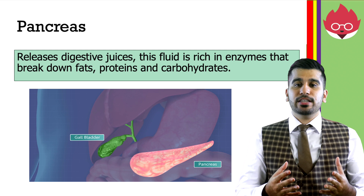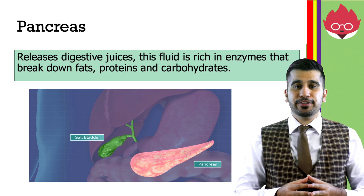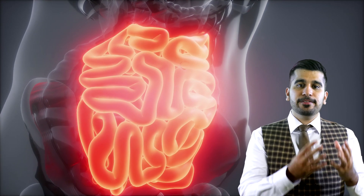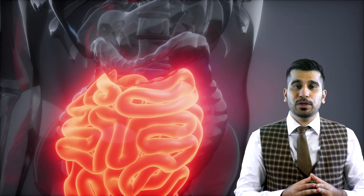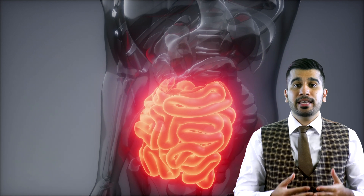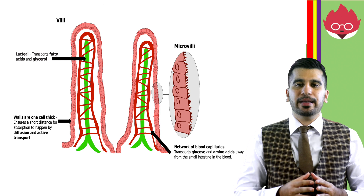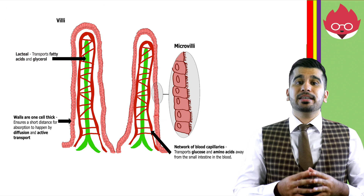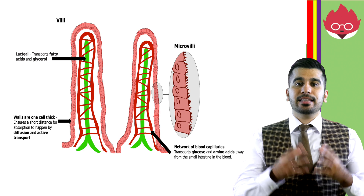The pancreas releases digestive juices rich with enzymes that break down fats, proteins, and carbohydrates. From the stomach, food enters the small intestine. At the duodenum, which is the first section of the small intestine, more enzymes break down carbohydrates, proteins, and fats into smaller molecules. At the ileum, the final section of the small intestine, any food still not absorbed is absorbed into the blood. The small intestine is made up of finger-like structures called villi, which are made up of cells called microvilli. Villi are very good at absorption because they have a large surface area, very thin walls, and a strong network of capillaries surrounding them.